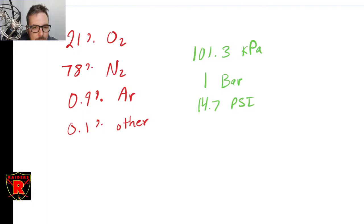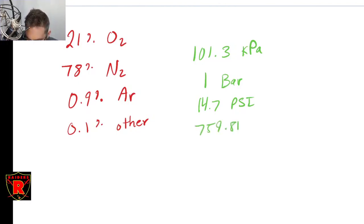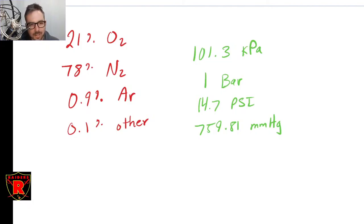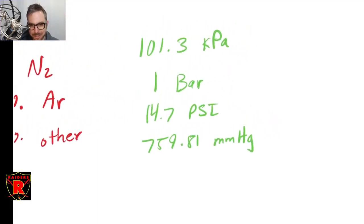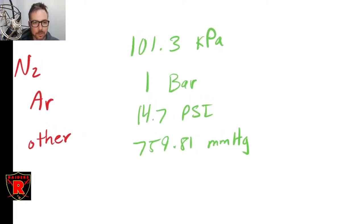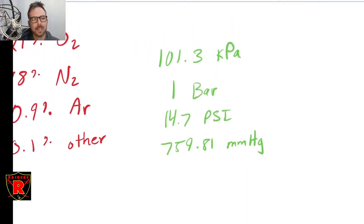We also use millimeters of mercury — 759.81 millimeters of mercury. That's a pressure measurement typically used in biology, and it's a little bit of an archaic measurement system. You'll notice when we talk about blood pressure, which I think we're going to get to later today or possibly at the beginning of tomorrow, we'll be discussing blood pressure in millimeters of mercury. All of these numbers represent the same pressure, just in different units.